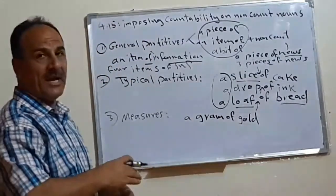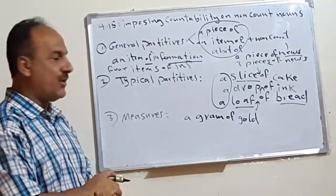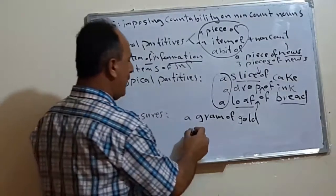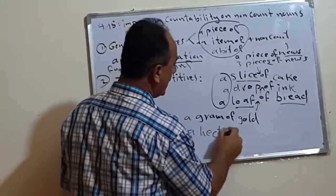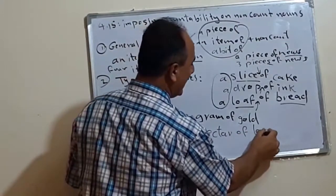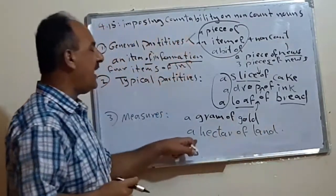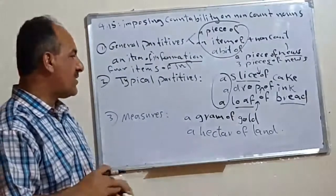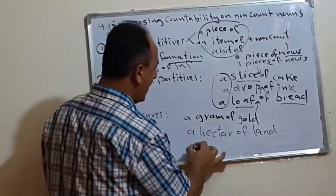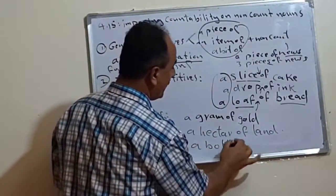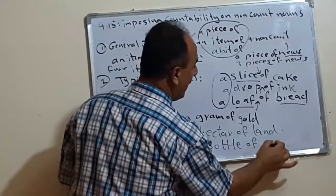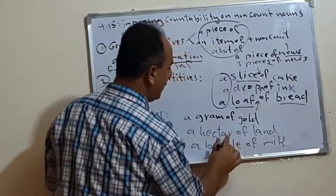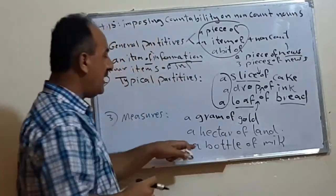Or, for example, we have the distance or the area. We say, for example, a hectare of land. A hectare of land. So, for example, milk. We say a bottle. A bottle of what? Milk. Why? Because we put the milk in bottle.